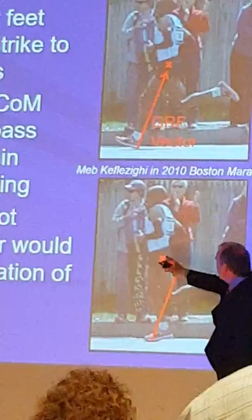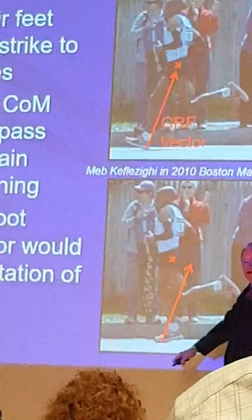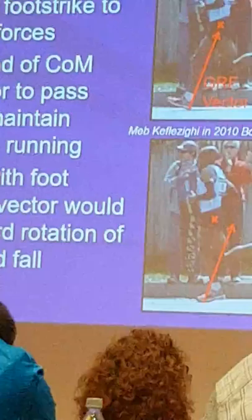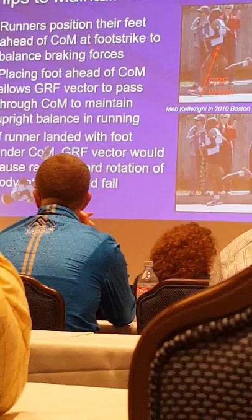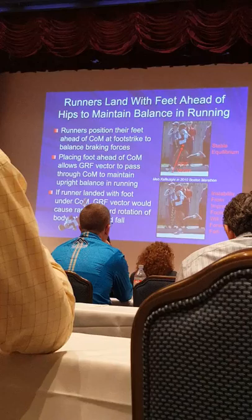If we cut and paste him forward so his body is leaned forward — as if he listened to Danny Dreyer and hit the ground with his foot under his center of mass — see how the ground reaction force vector changes. That's what would happen to the runner. That took an hour of work to create.